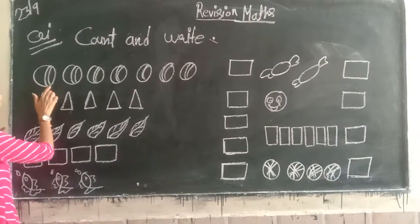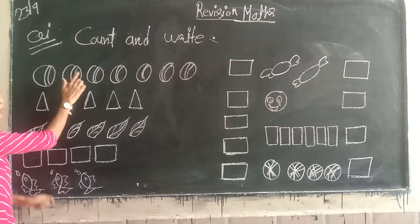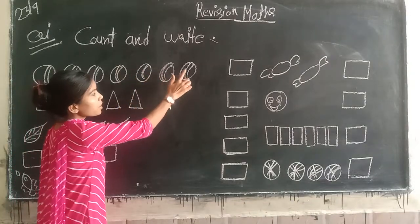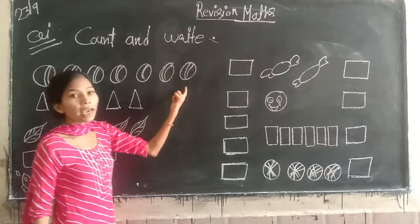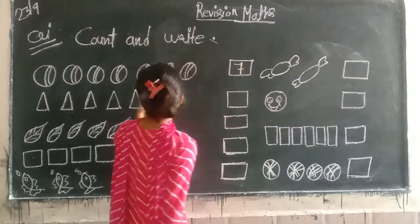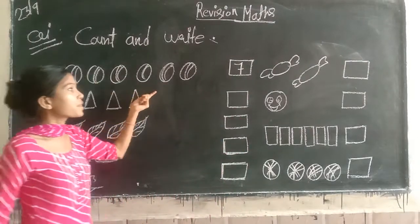So the first object is balls. Now we have to count these objects. One, two, three, four, five, six, seven. How many balls are there? Seven. Then how many balls are there? Six.